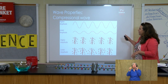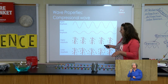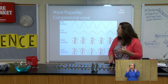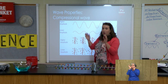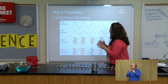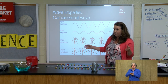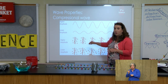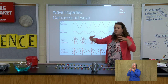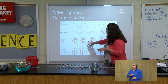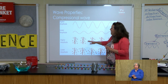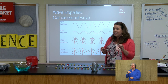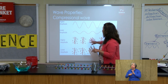Comparing the transverse wave to the compressional wave: the compressional wave has areas where molecules are close together under high pressure — those are called compressions. Then there are areas where particles are farther apart at low pressure, called rarefactions. Compressional waves do have wavelength and amplitude, though they're not as easy to see.